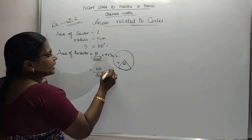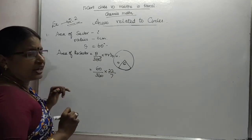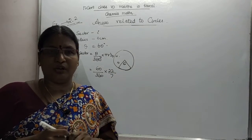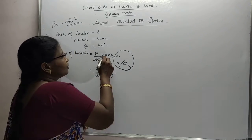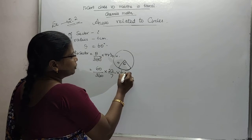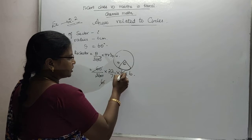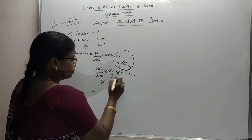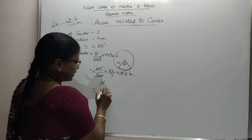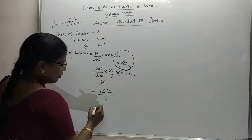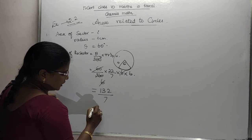So theta is 60 by 360 into pi. We should use 22 by 7. r is equal to 6 into 6. Cancel 6, 2s are 12, 1, 6, 2s are 12.